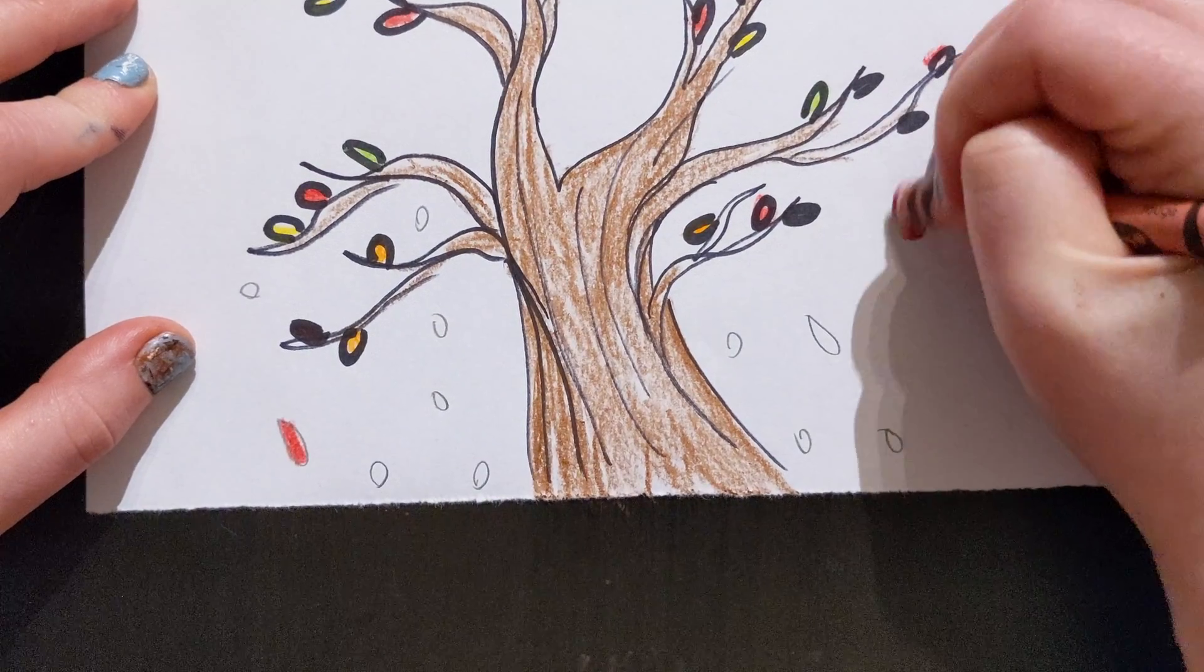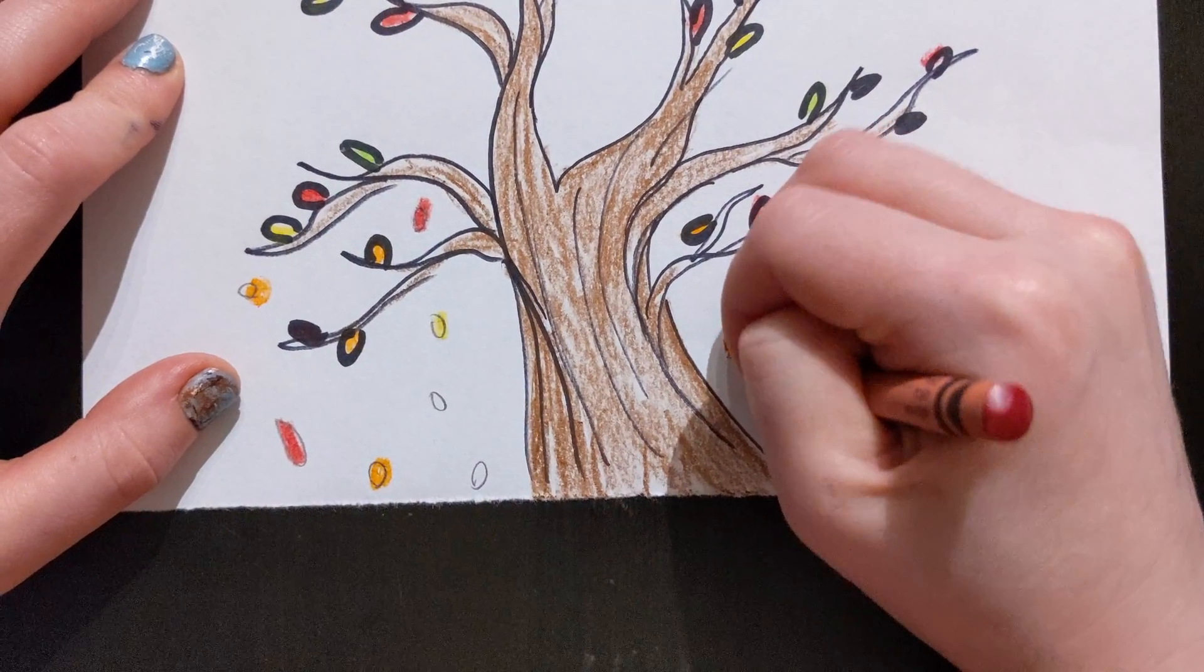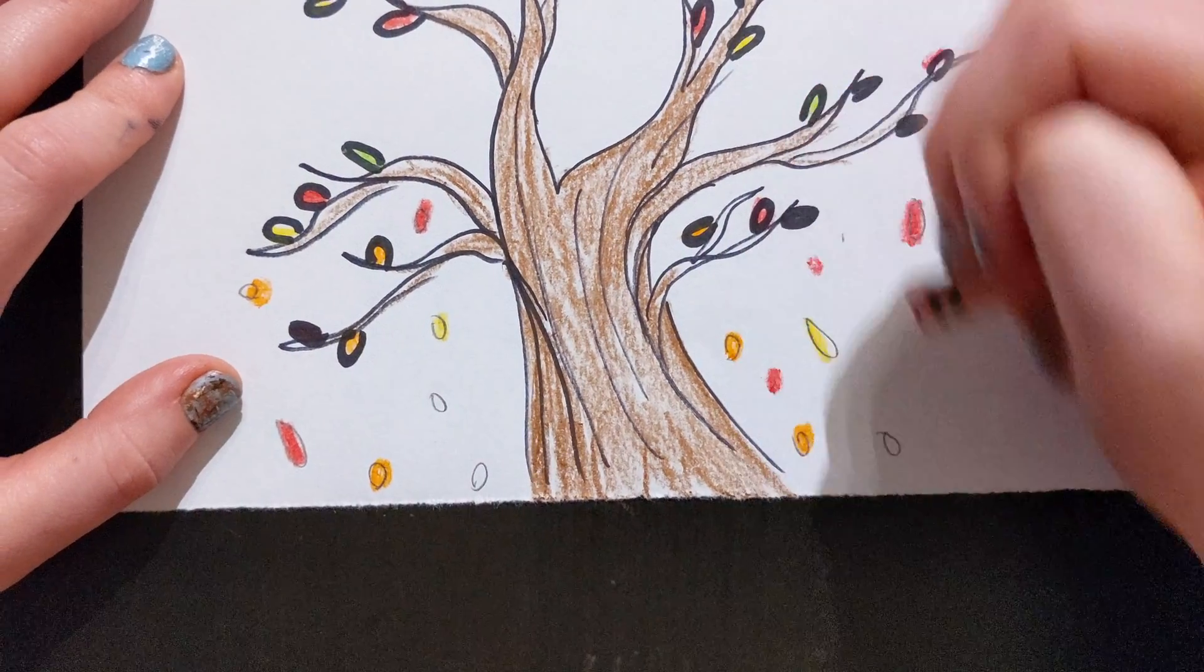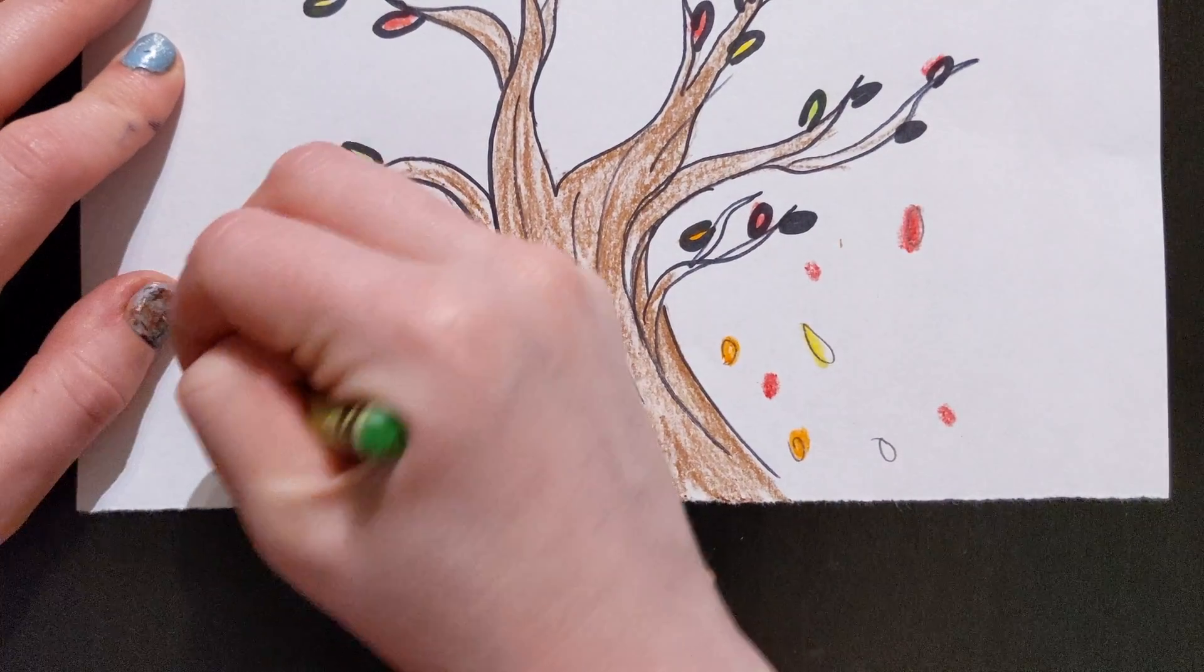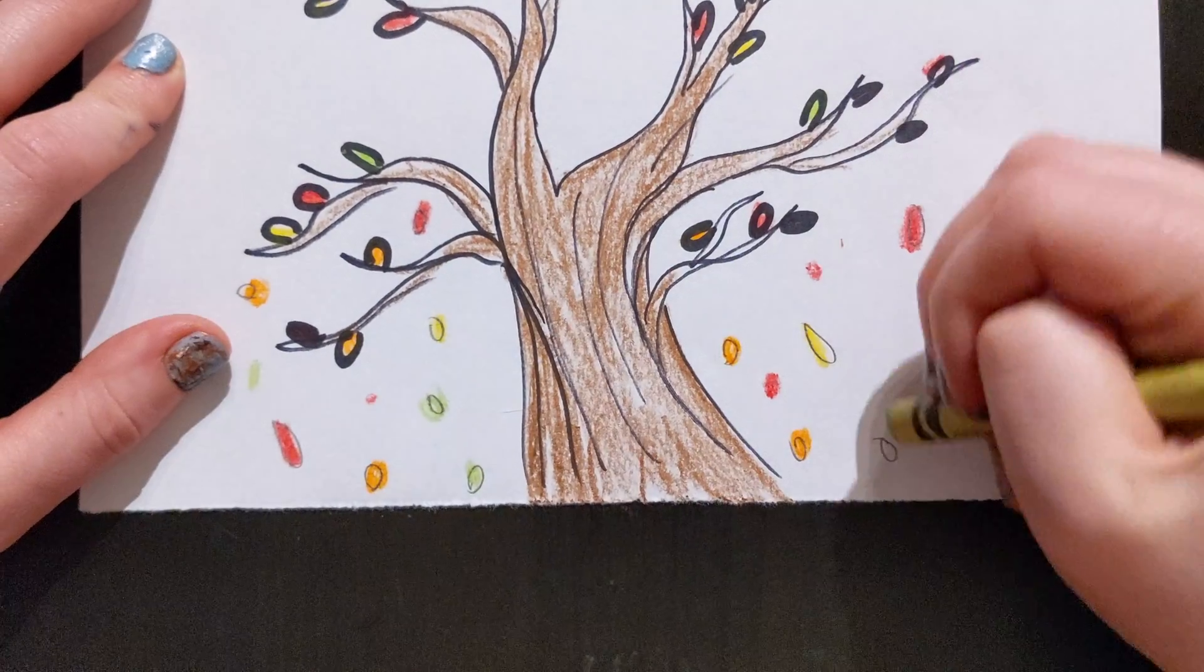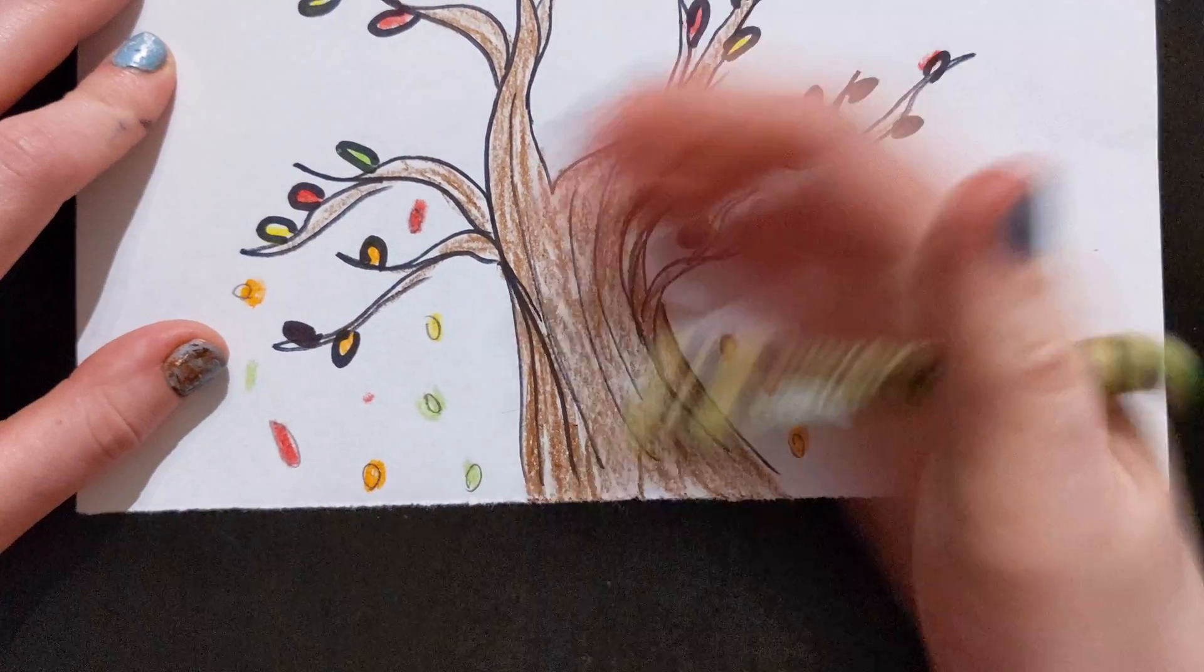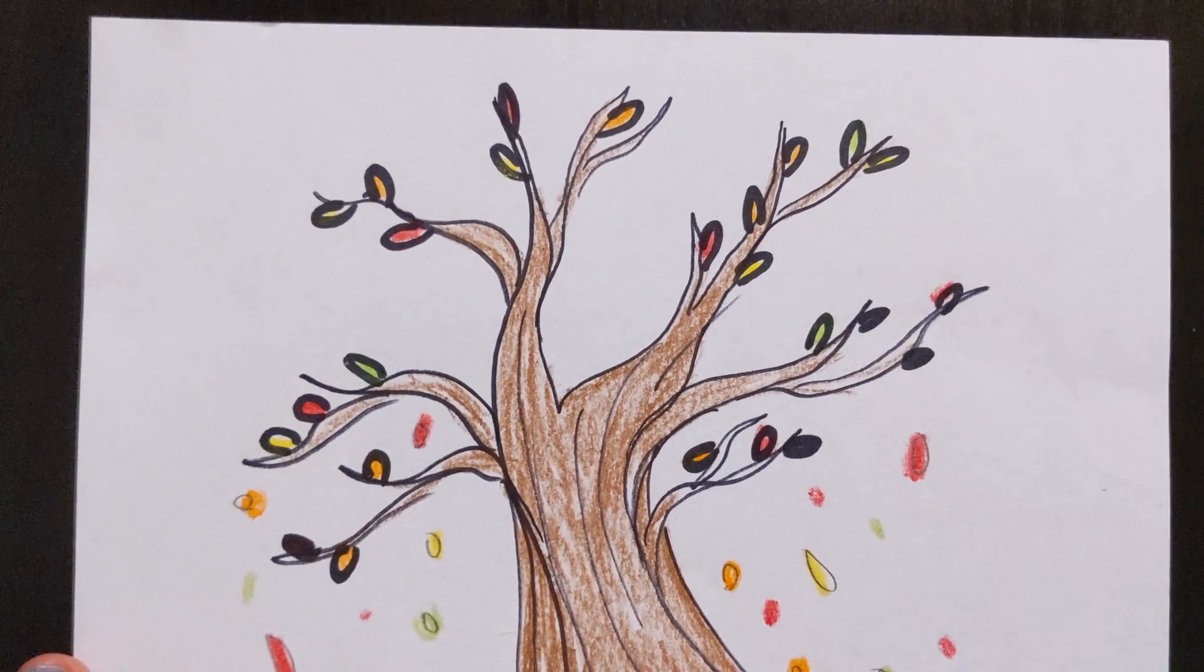But it's definitely a good idea to draw on your leaves with your pencil. Or you can always just draw it with your crayon. It doesn't just have to be with a pencil. Okay, and then after that you are done with your fall tree.